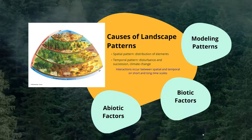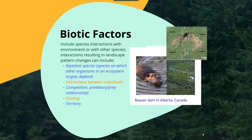Another element contributing to landscape patterns are biotic factors, including species interactions with the environment or with other species. Keystone species — ones that other organisms in an ecosystem largely depend on — are typically responsible for larger-scale changes. However, interactions between individuals can also form different patterns; mechanisms of competition, predator-prey relationships, grazing, and territoriality can actually contribute to these patterns as well. In the example here, there is a beaver dam located in Alberta, Canada, which can actually be seen from space and has a pretty large impact on the pattern within this wetland region.